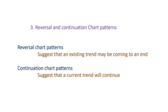Two examples of reversal patterns are the head and shoulders and double top chart patterns, both of which indicate a potential bearish trend reversal. Two examples of continuation patterns are the flag and pennant patterns, which suggest that the current trend will continue. For example, in the head and shoulders pattern, the neckline is the key level of support or resistance to monitor, and a break below this level could signal a bearish trend reversal. In the next few slides, I will be using examples of head and shoulders and double top reversal patterns, as well as flag continuation patterns, to determine the direction of the trend and enter trades.